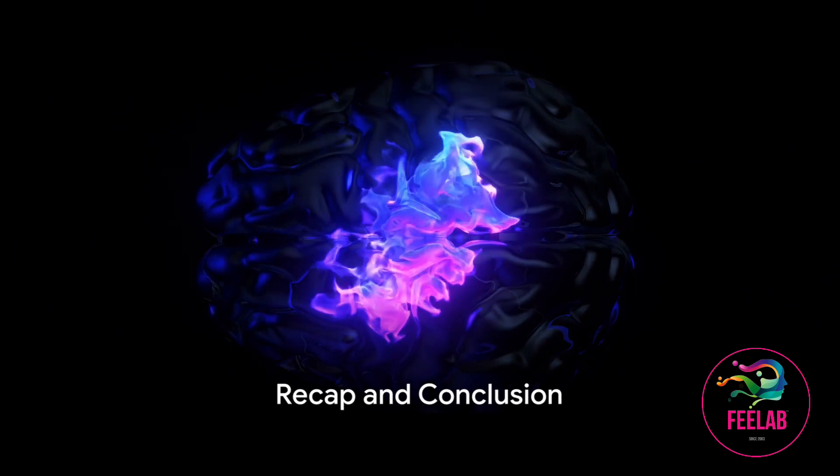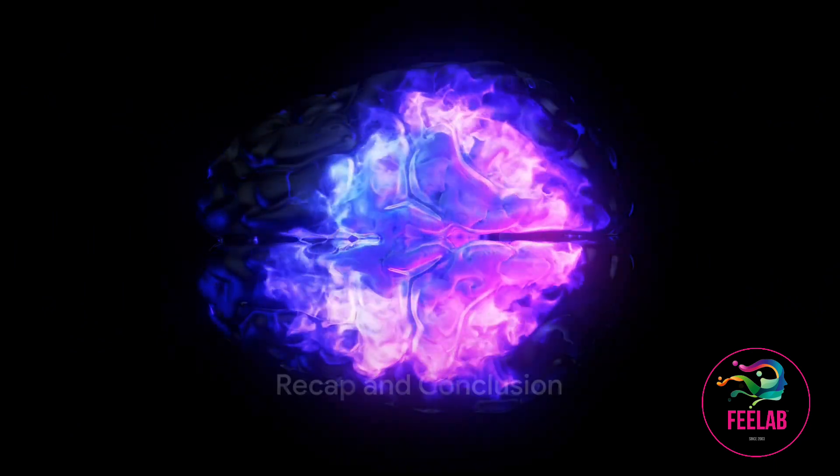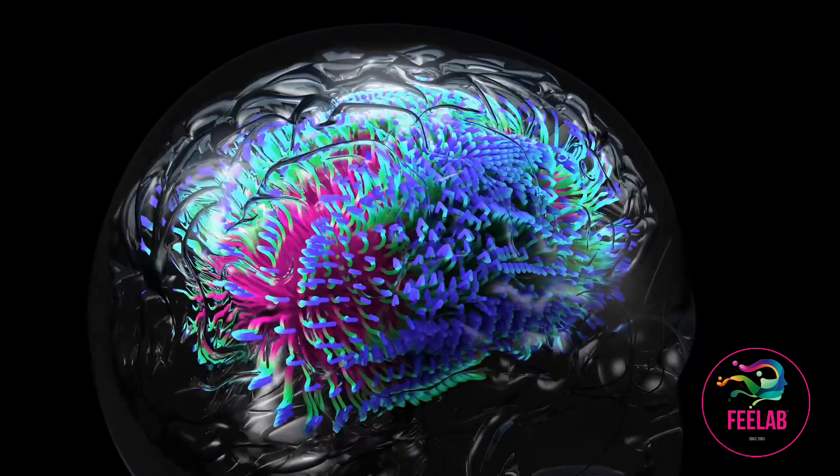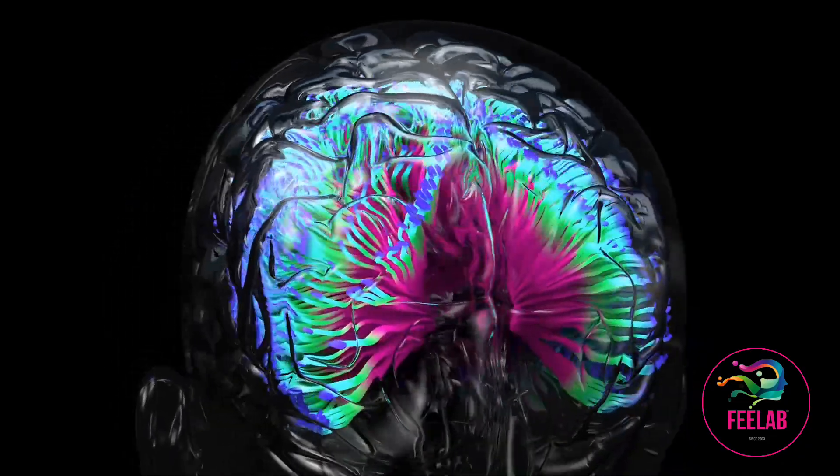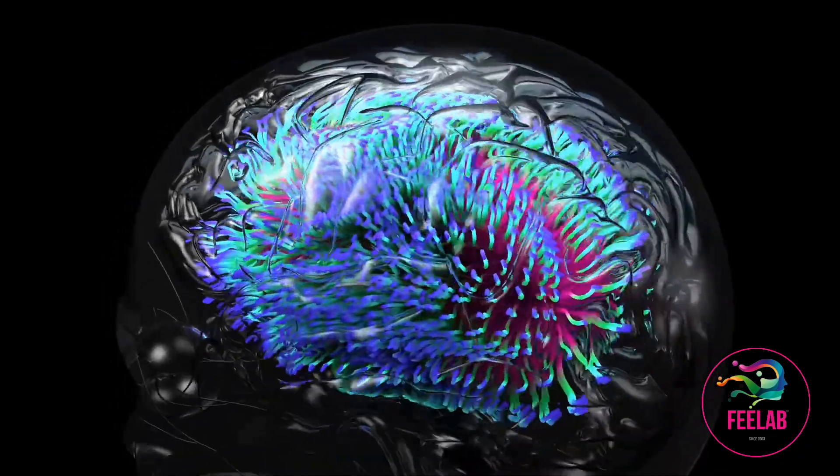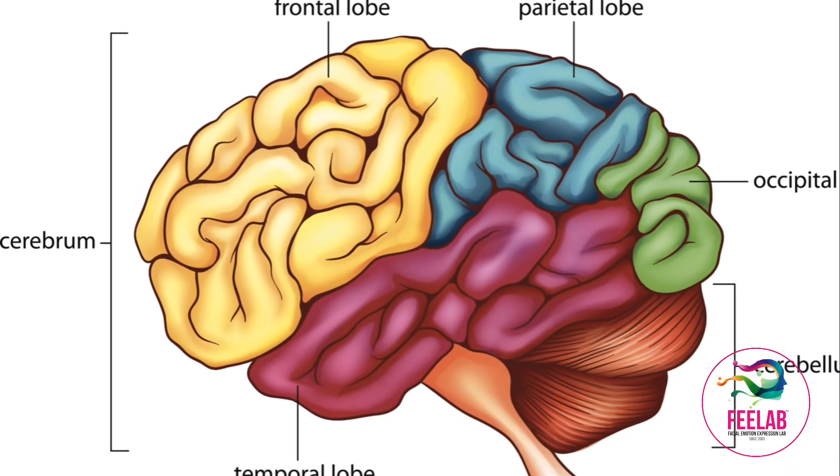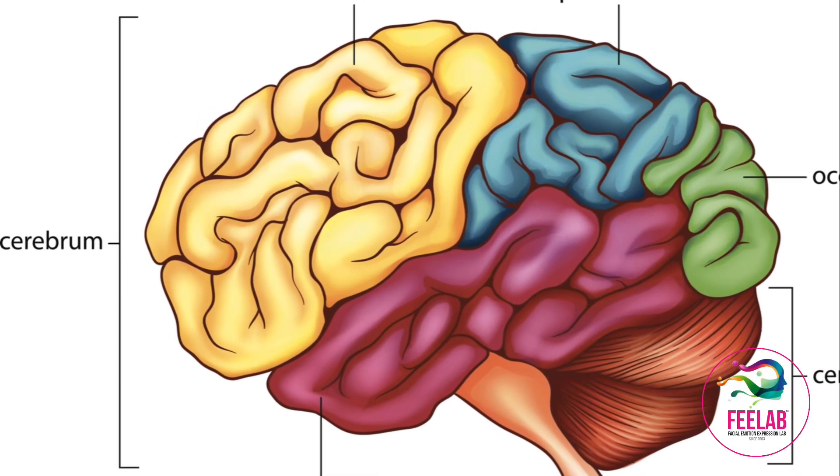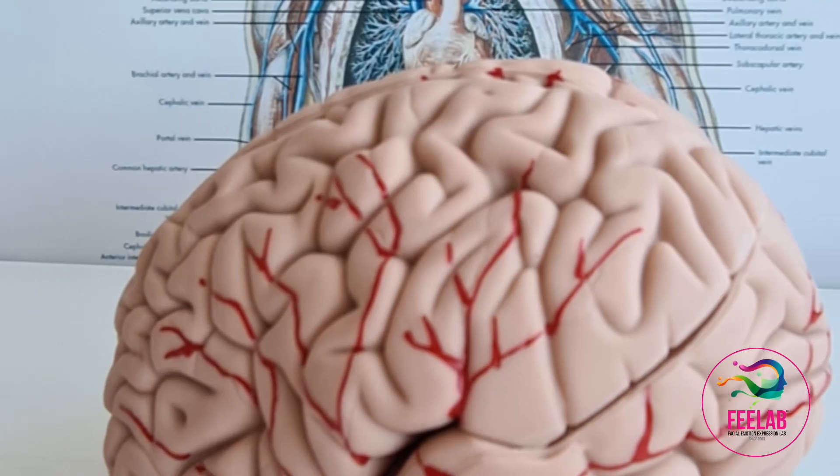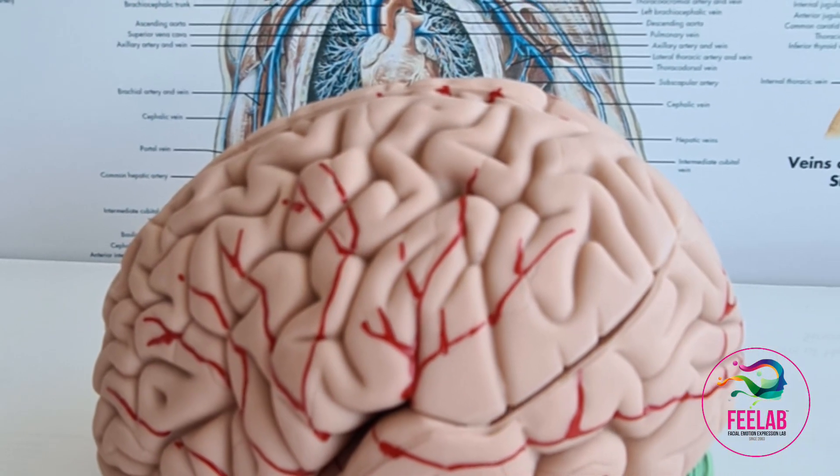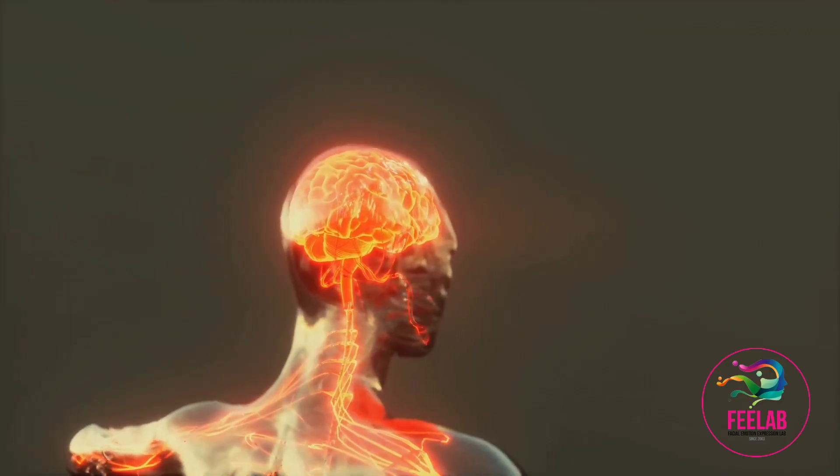In the last few minutes, we've dived into the depths of neuroscience and bio-behavioral psychology, explored the triangle of human survival, and discovered the intricate link between our brain, face, and emotions. We've seen that these three elements are not just interconnected but interdependent, forming a complex system that has evolved over millions of years.